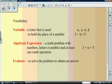An algebraic expression is a math problem with numbers, letters, variables, and at least one math operation. To evaluate, you solve the problem and you obtain the answer. So 3 plus w equals 5, we can pretty much understand by substituting 3 plus 2 equals 5, and that would be the solution.